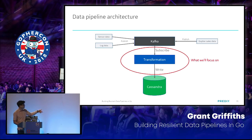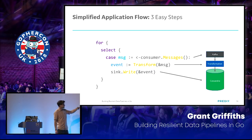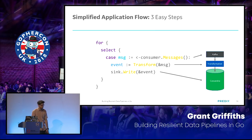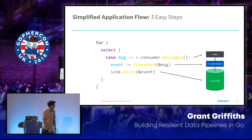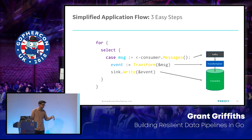What we're going to focus on is specifically the piece of reading from Kafka and writing to Cassandra. It's a very simplified application flow. When you use the Sarama Cluster library, you get a consumer object, and from that consumer struct you can get messages. That's a read-only channel, and you can read messages as they arrive. When a message comes into that Kafka topic, you get that message, send it to the transform function, get back an event, and write that event to Cassandra — a simple three steps: read from Kafka, do business transformations, write to Cassandra.